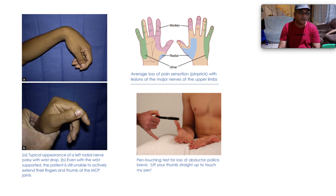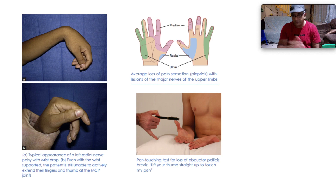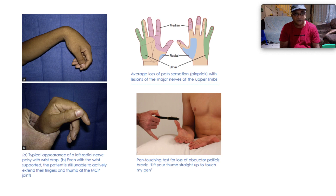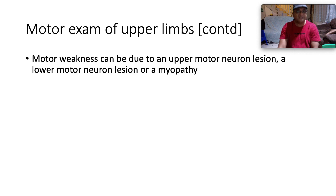Depicted on the left is a wrist drop — a left radial nerve palsy — where even with the wrist supported the patient cannot actively extend their fingers and thumb at the metacarpophalangeal joints. On the top right is the distribution of sensory loss with specific peripheral nerve lesions: the lateral two-and-a-half digits are supplied by the median nerve, the medial one-and-a-half digits by the ulnar nerve, and the radial nerve covers most of the dorsal aspect of the hand. The pin-touching test depicts loss of abductor pollicis brevis — ask the patient to lift their thumb straight up to touch your pin, as this muscle is innervated by the median nerve.